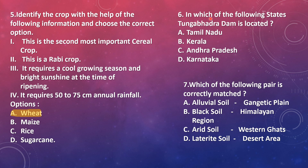In which of the following states is the Tungabhadra dam located? In Geography we studied that the Tungabhadra flows from the Western Ghats through Karnataka, Andhra Pradesh and Telangana, and it is a tributary of the Krishna River. The dam is obviously located in Karnataka because the river originates there. Andhra and Tamil Nadu don't have a connection here. The right answer is option D, Karnataka.